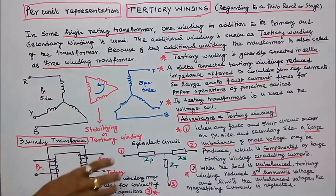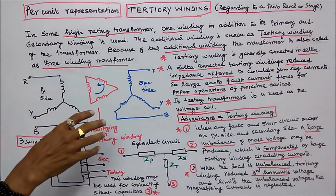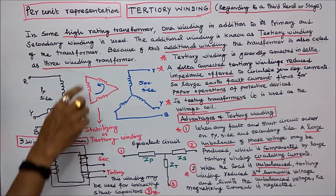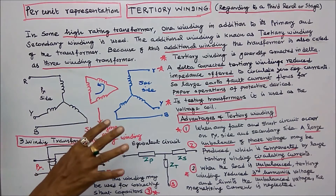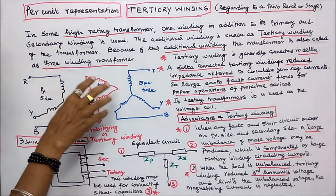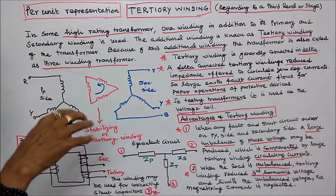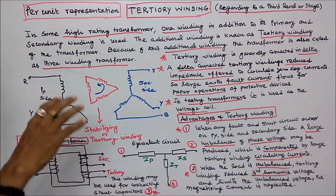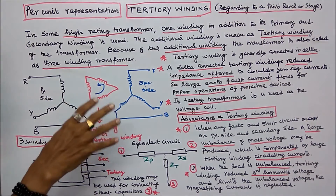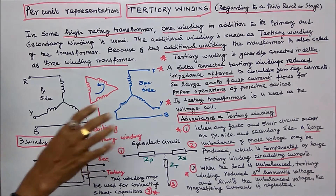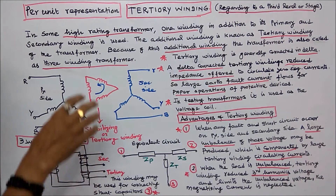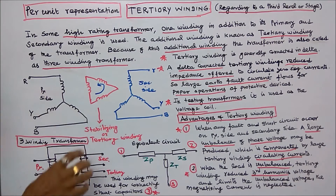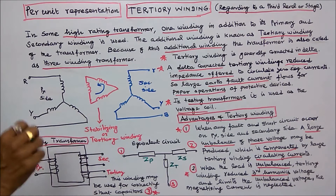Because of this additional winding, the transformer is also called a three winding transformer. The tertiary winding is generally connected in delta. A delta-connected tertiary winding reduces the impedance offered to circulating zero sequence currents, so large earth fault current flows for proper operation of protective devices. In testing transformers it is used as the voltage coil.